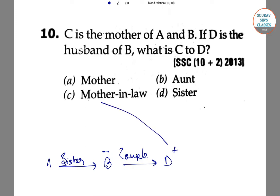D is related to C — the relationship is an unknown or indirect one through the family tree.